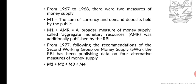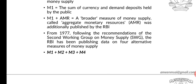The first measure is M1, which denotes the sum of currency and demand deposits. The second measure is M1 plus AMR. AMR is aggregate monetary resources, and it is a broader measure of money supply. The RBI publishes M1 separately and AMR separately.